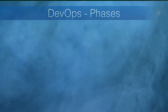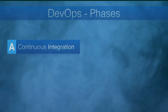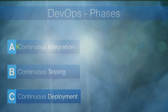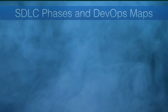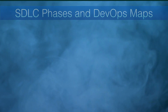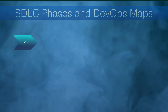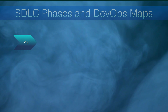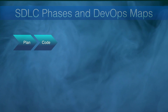DevOps mainly focuses on four phases: continuous integration, continuous testing, continuous deployment, and continuous monitoring. These are the standard SDLC phases. The planning phase comes before the development phase, where requirement documentation, architecture designing, delivery planning, etc. happens. The coding phase is basically the construction phase that includes unit testing.